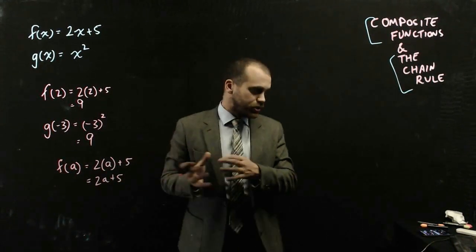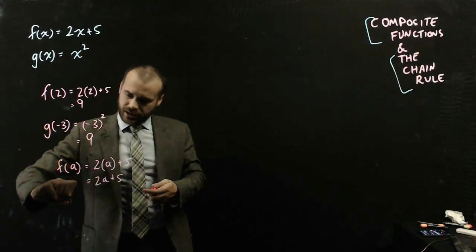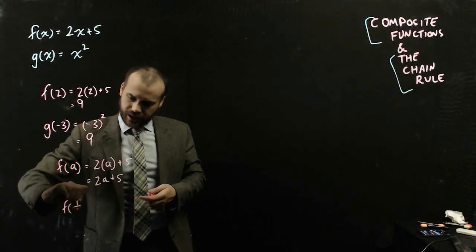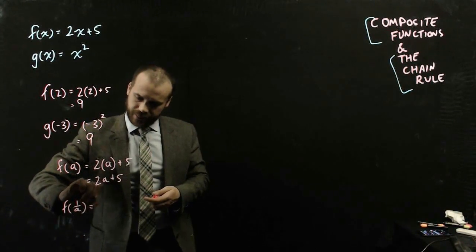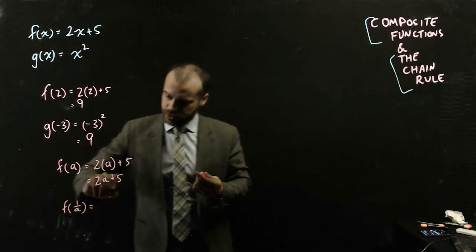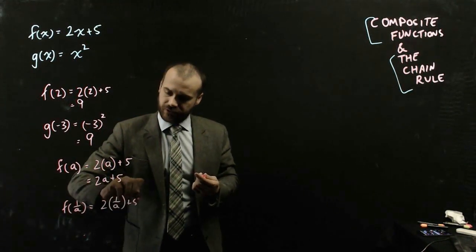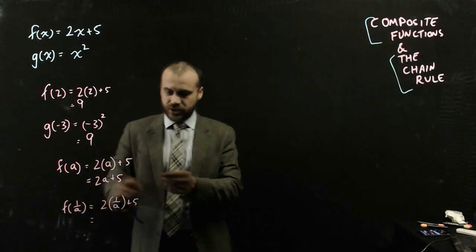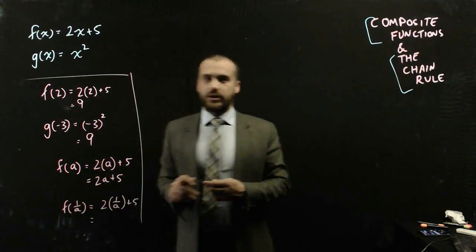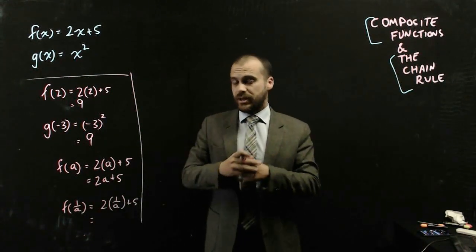You can shove anything you want in there. So if I write f of 1 over a, that just means put 1 over a into wherever x was, so that's going to be 2 times 1 over a plus 5, and you can simplify that if you want. A composite function is where you take one function and shove it into another function.